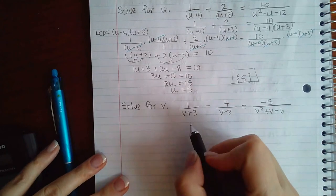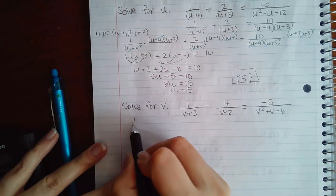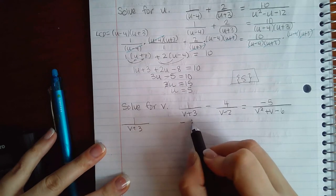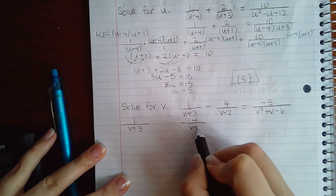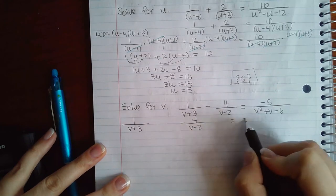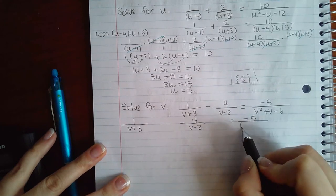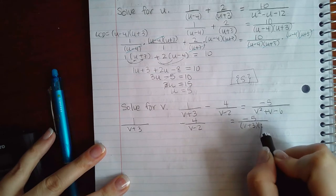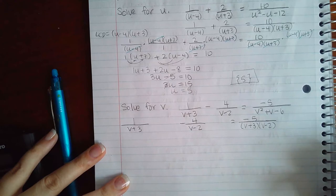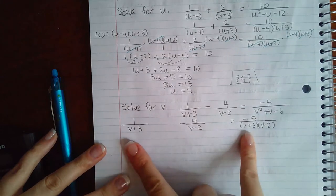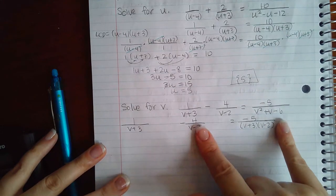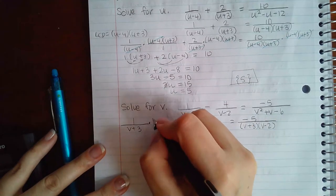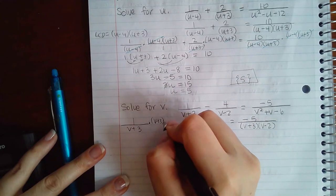Here I'm going to factor this, and this will factor into v plus 3 and v minus 2. So the LCD here is going to be the v plus 3 they have in common times the v minus 2 that they have in common. That's what I'm going to multiply to every fraction.